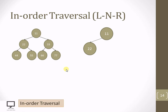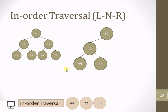Let's start with root node 11. Check for left child — present, step down. For 22 as root, check left child — present, step down to 44. Node 44 has no left child, so process 44. No right child either. Return back to 22, process it. Right child of 22 is present, step down to 55. Node 55 has no left child, process 55, no right child. Return back — the subtree rooted at 22 is done. Now return to 11.